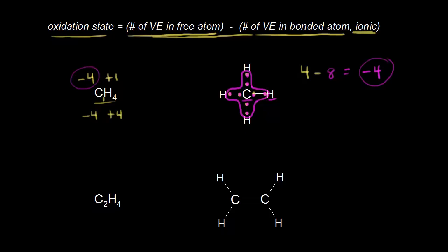Let's move on to C₂H₄, ethene or ethylene. What's the oxidation state of carbon in this molecule? Hydrogen should be plus one, and we have four of them for a total of plus four. So the total for carbon should be minus four, because the sum has to equal zero. But this time we have two carbons, so minus four divided by two gives us minus two — each carbon should have an oxidation state of minus two.